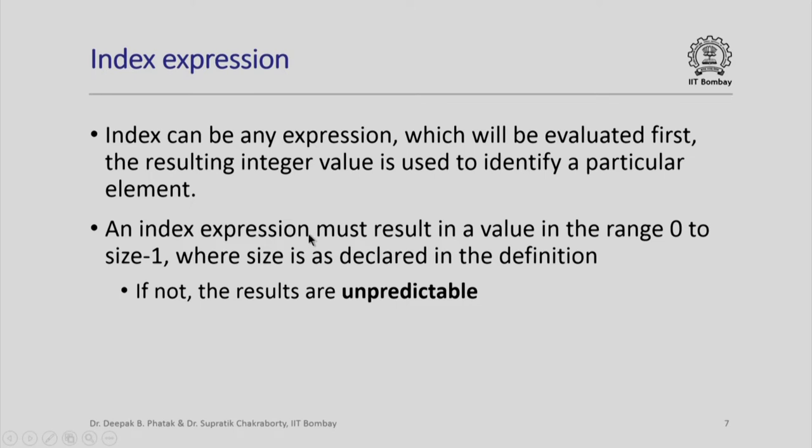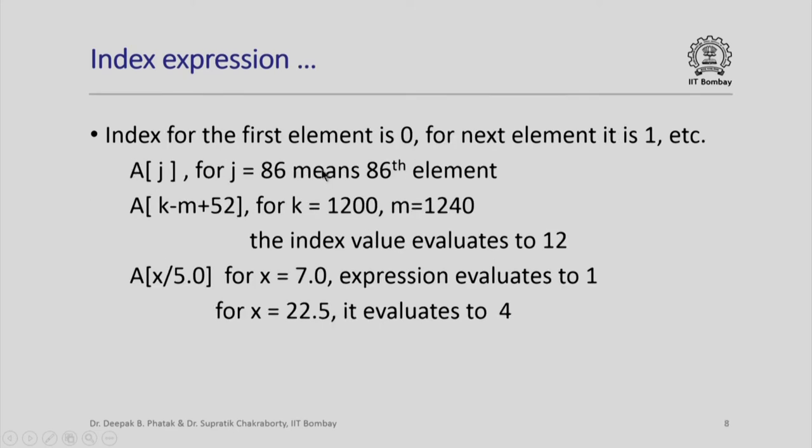An index expression naturally must result in a value in the range 0 to size minus 1. For example, if I have declared an array of size 100, the index must range in the region 0 to 99. Please remember that if we do not do that, then the results in C++ are completely unpredictable. It is our responsibility to maintain an index at any time to be between these limits.